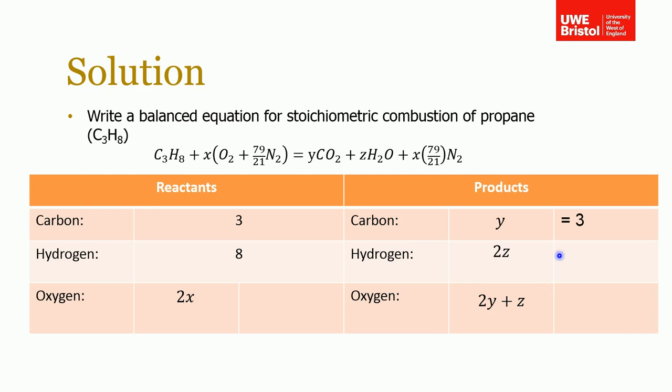Y is equal to 3, Z is equal to 4. Now we can work out how many oxygens we should have on this side, which is 10, by finding 2Y + Z.